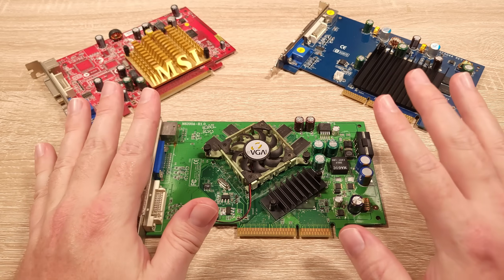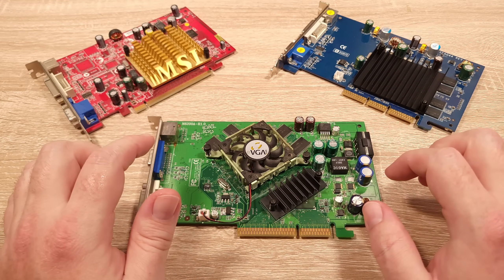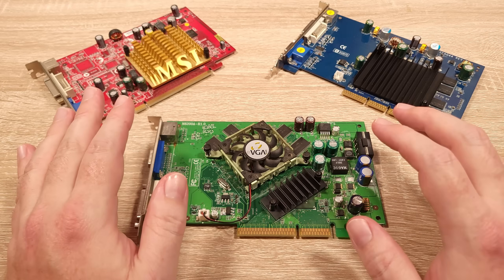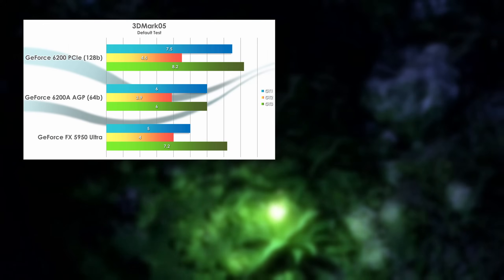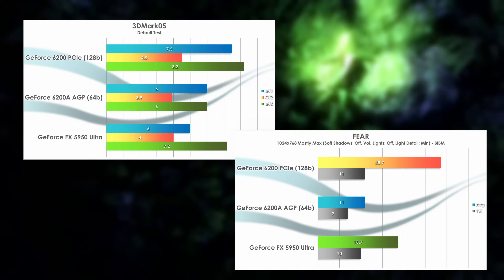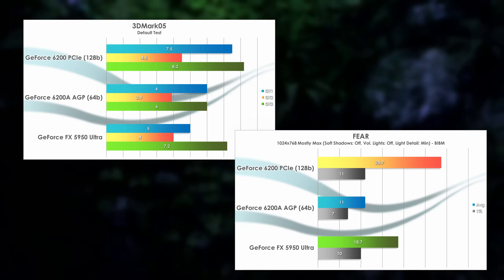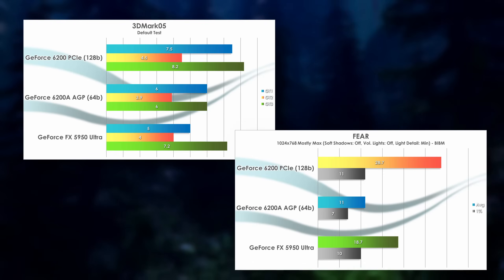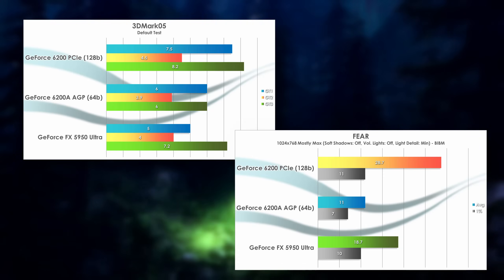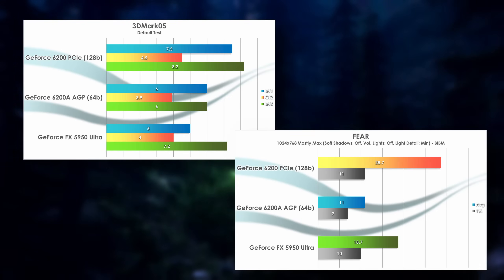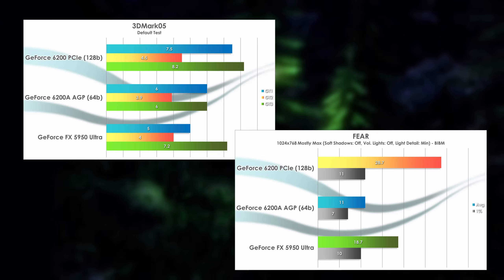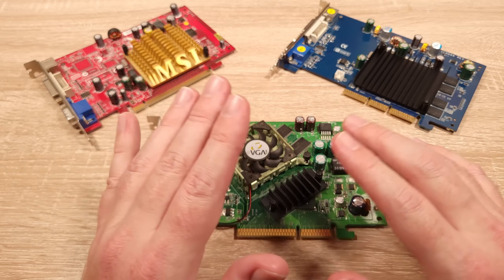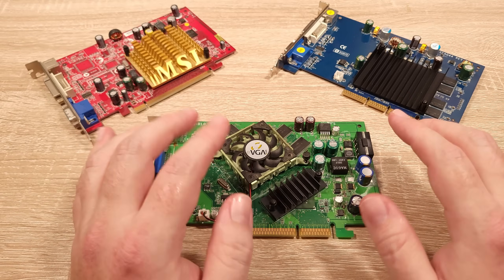Make no mistake, this was a huge step up for NVIDIA — not just in terms of budget offerings, but in their overall baseline shader performance. Just look at 3DMark 05 and FEAR compared to the previous flagship GPU, the GeForce FX 5950 Ultra. In these DirectX 9-heavy tests, the 5950 Ultra is nearly matched or even loses by a wide margin depending on the version of the 6200 — which is absolutely ridiculous. I can't think of another time when something like this has happened from just one generation to the next.